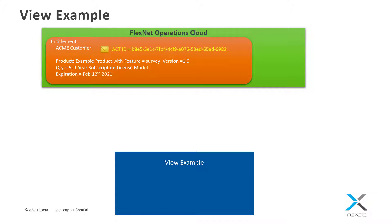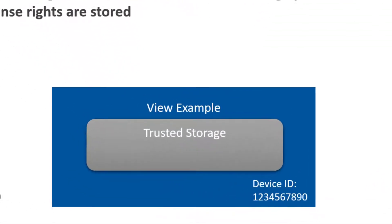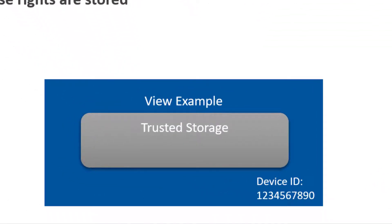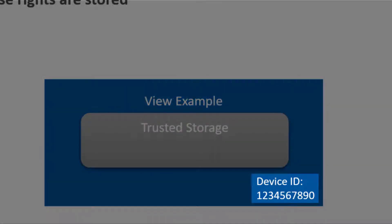Let's take a look at the function of the View example provided in the toolkit. First, it will create what is called trusted storage if it does not yet exist. Trusted storage provides a secure location where encrypted license rights are stored on the target device. Trusted storage and the licenses contained in it are tied to a device ID, which is a unique identifier for the device that will be licensed.